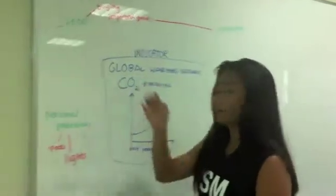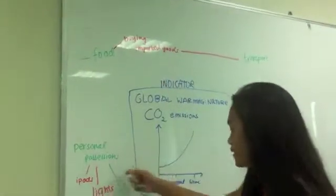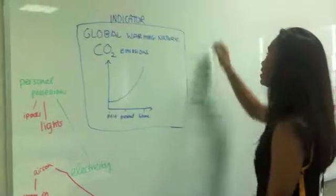So what you have here, you first start out with general ideas. So you have food, personal possessions, electricity, changes in values, and transport.